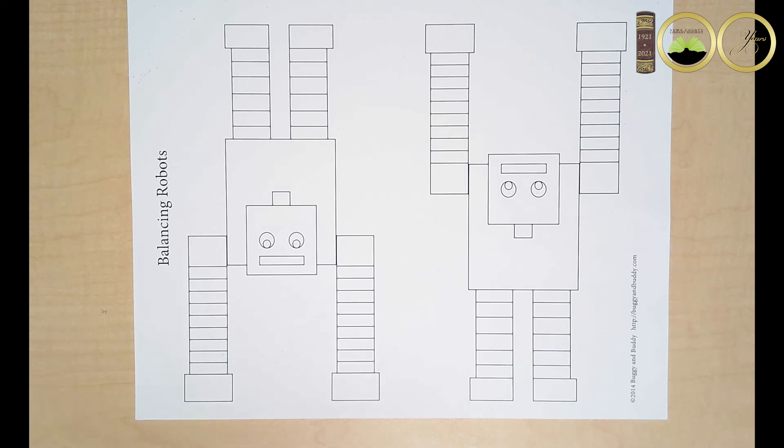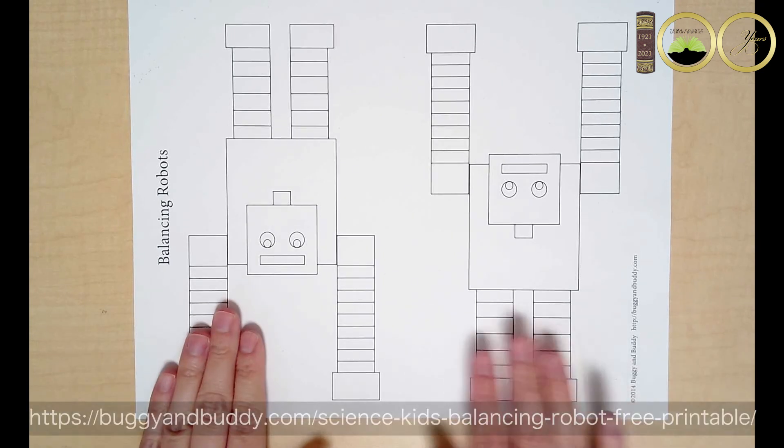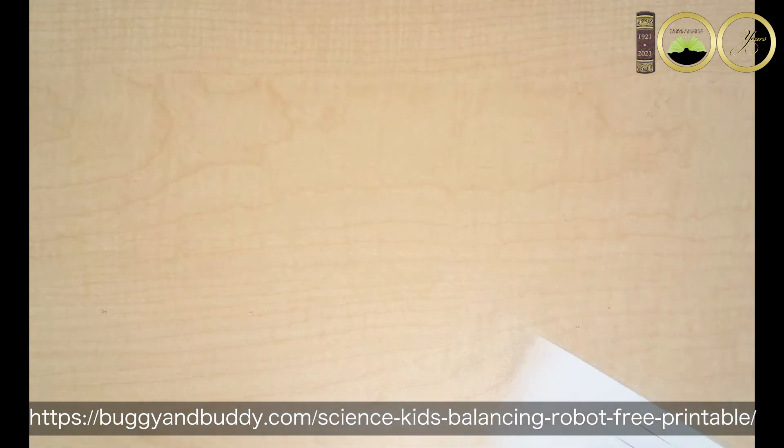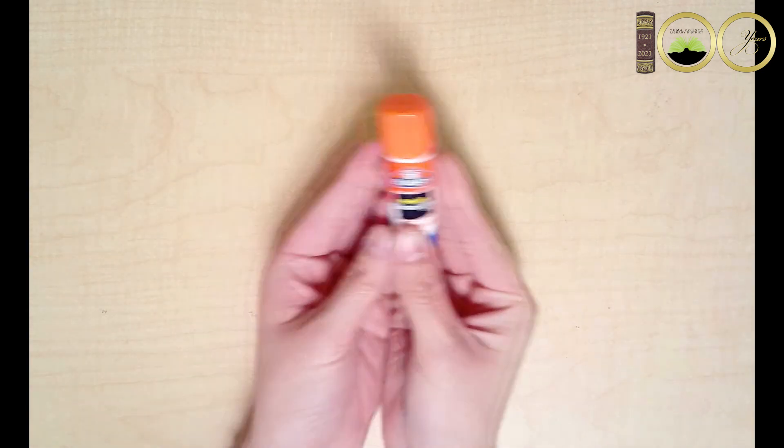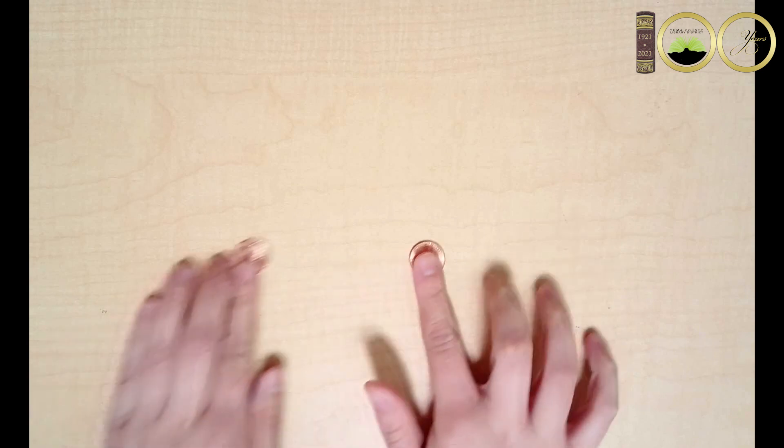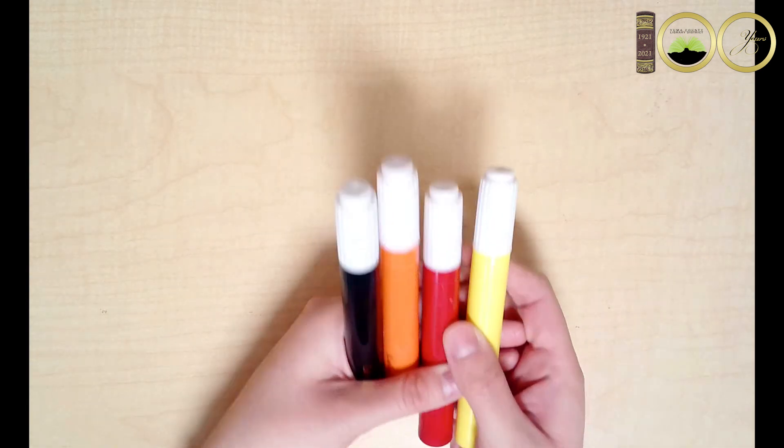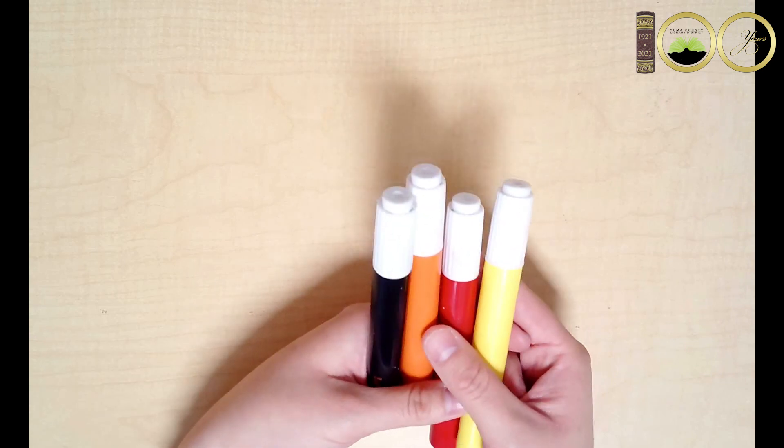The materials needed for this craft are a printable of the robot template on cardstock paper, which you can find on the buggyandbuddy.com link, scissors, a glue stick, scotch tape, two pennies, and some markers if you'd like to color your robot like I did.